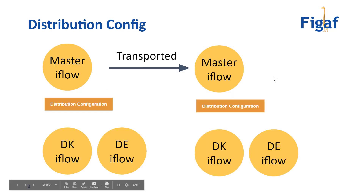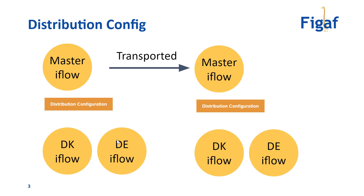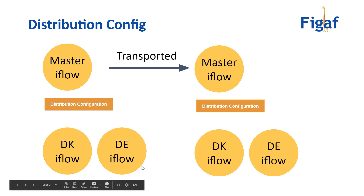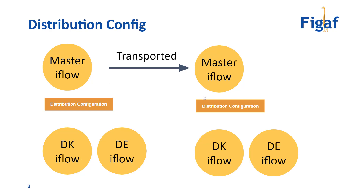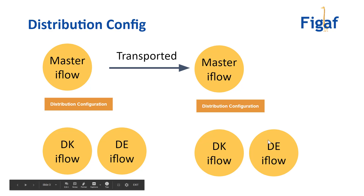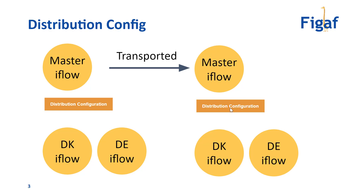The idea is that you'd have a master iFlow, and then you create a distribution config in the VGAF tool that will make sure you create the different instances of the iFlow. If you make updates, it will also enable you to easily update all iFlows so they're all in sync. Once you're done, you can transport the original iFlow, create a new distribution config, and update the iFlow — because there will be differences between environments, like different host values.